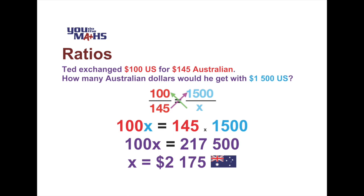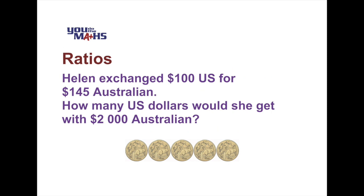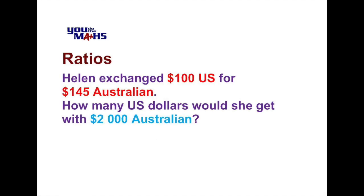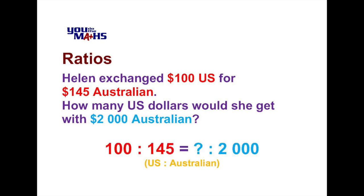Now another question, this time involving Helen, with the same exchange rate — 100 US dollars for 145 Australian dollars. She wants to know how many US dollars she's going to get if she swaps 2,000 Australian dollars. We'll write the ratio we do know, which is 100 to 145 in red, and for our other ratio we'll put the unknown value first, since we don't know the number of US dollars. That ratio is an unknown (question mark) to 2,000 Australian dollars.